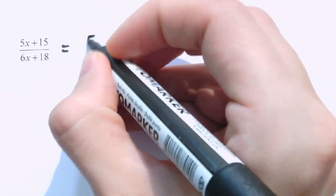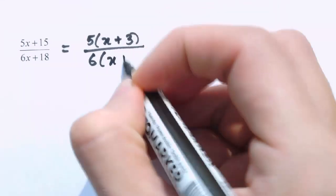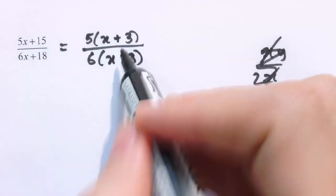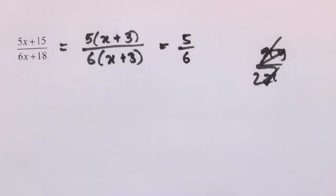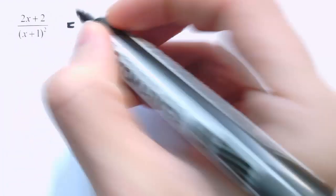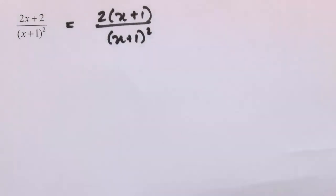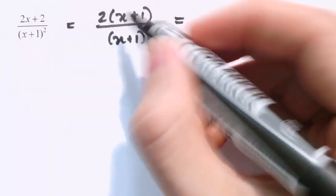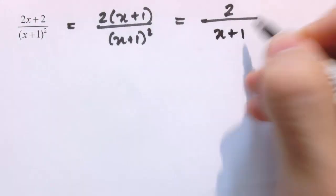The top here has a factor of 5, so I can write this as 5 times (x plus 3). The denominator has a factor of 6, so I can write it as 6 times (x plus 3). Now we see the common factor is (x plus 3), giving a final answer of 5 sixths. In another example, the denominator is already factorised as (x plus 1) squared. The numerator has a factor of 2, giving 2 times (x plus 1) over (x plus 1) squared. Cancelling (x plus 1) top and bottom leaves 2 over (x plus 1).